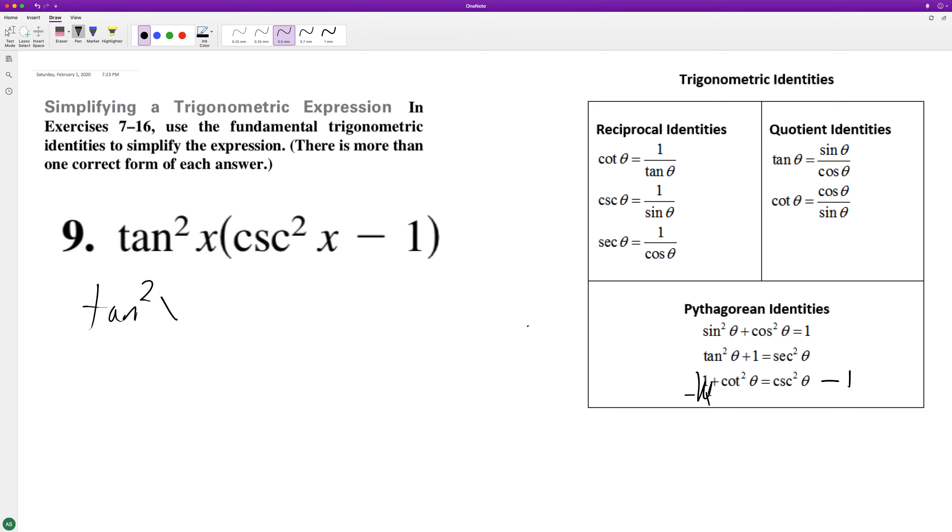So tangent squared x times cotangent squared x. Now, these cancel each other out, but let me show you that.